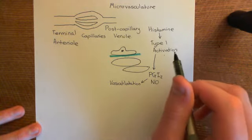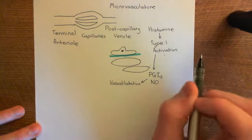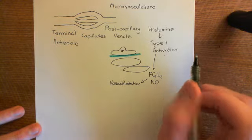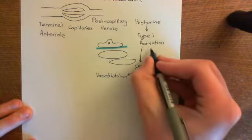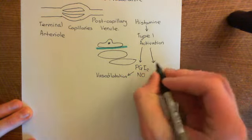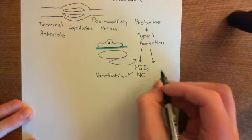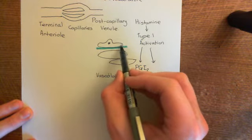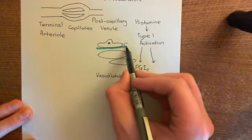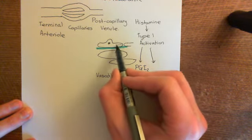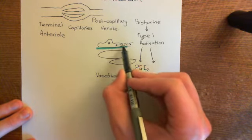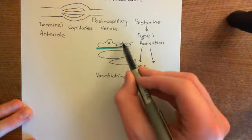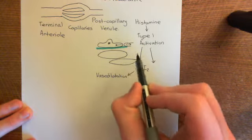The sad reality is that this allergen is not worthy of this powerful attack. Type 1 activation also causes endothelial cell contraction — the endothelial cells contract, retract their edges, and open up gaps between neighboring endothelial cells. This allows fluid from the blood to move through these gaps into the lamina propria.